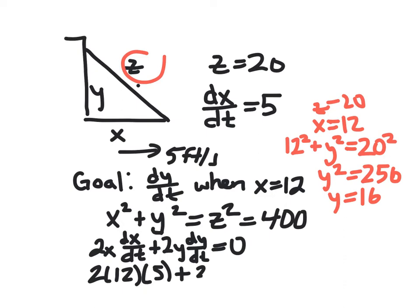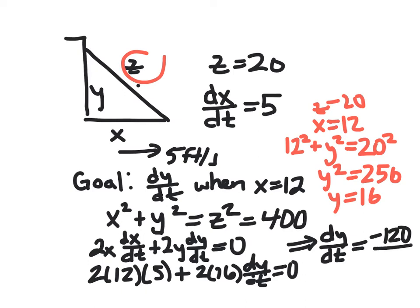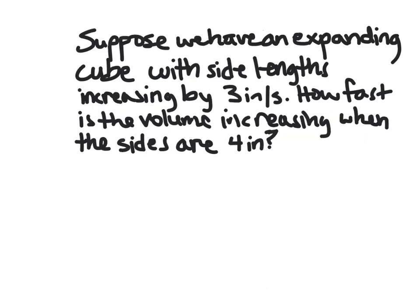Okay, and so then we can write 2 times 16 here. dy/dt equals 0. And then the last step is to subtract over and divide to get dy/dt by itself. So 2 times 12 times 5 is 120. We have negative 120 when we subtract that over, and we divide by 2 times 16, or 32. So our velocity in the y direction is negative 120 over 32 feet per second. It's moving downward at 120 over 32 feet per second.